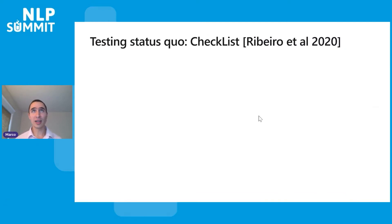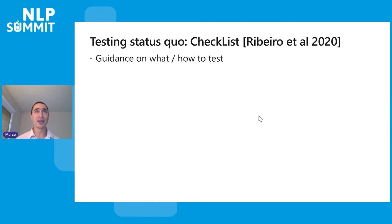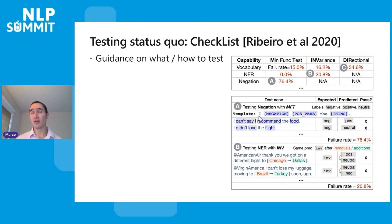First, let's get into the status quo of testing. I gave a talk at the same event last year where I presented CheckList, which was published at ACL 2020. We talked a lot about testing NLP models. In that presentation and paper, we had a lot of guidance on what and how to test models. We had this matrix of different capabilities and different test types, along with a lot of tools for how to do it.